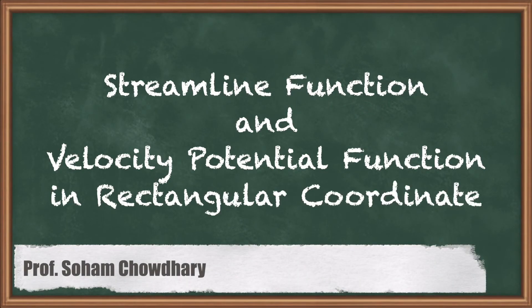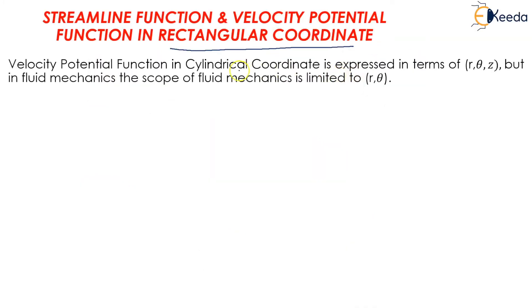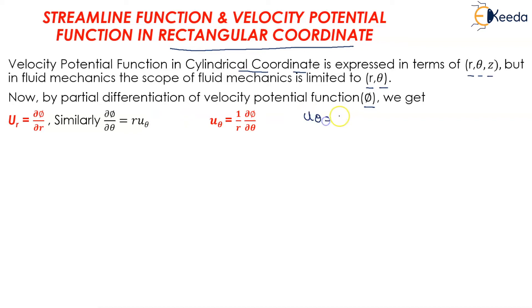Let us start with streamline function and velocity potential function in rectangular coordinates. Velocity potential function in cylindrical coordinates is expressed in terms of r, theta, and z, but in fluid mechanics its scope is limited only to r and theta. By partial differentiation of velocity potential function phi, we get ur = dφ/dr, and dφ/dθ = r·u_theta, so u_theta = (1/r)(dφ/dθ).